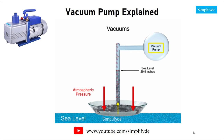If a vacuum pump is connected to the top of the mercury column and allowed to run, the mercury column would not rise as high as with a sealed barometer. This is because no vacuum pump can achieve a perfect vacuum. Vacuum pumps are given their rating based on how high they can pull the level of mercury upward towards a perfect vacuum.